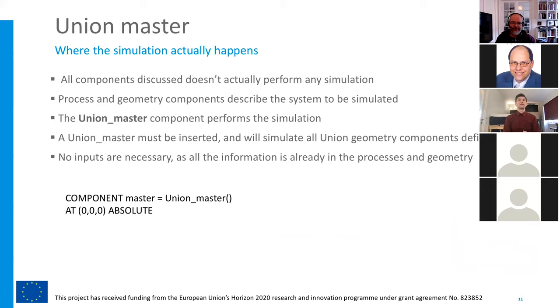The last bit that's needed to actually perform the simulation is the Union Master, as Peter mentioned. Because all these previous components I discussed, they don't actually perform any simulation. They just describe the problem. The Union Master is just inserted after all of that. It collects information from all of the previous components and will then simulate that entire system. So this doesn't need any inputs in the McStas instrument file. You just put an empty component of Union Master there, then it will pick it all up. And that's what allows me to do multiple scattering between all the geometries. Because they are effectively simulated as one big component.